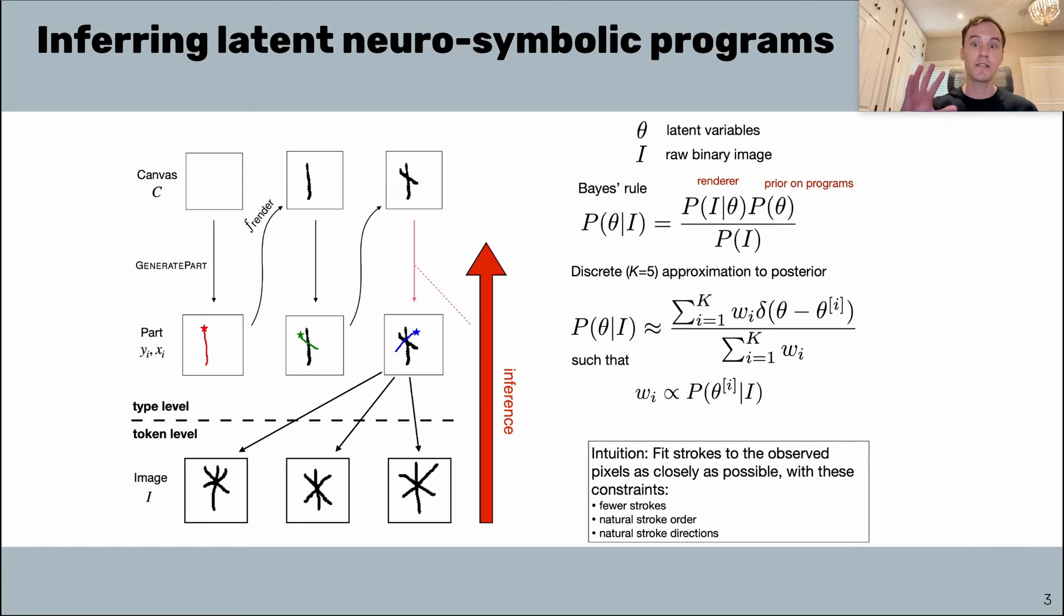Basically, we're inverting this generative model using techniques from Bayesian inference to reason about latent variables or latent stroke trajectories given an observation.